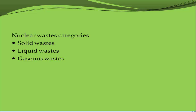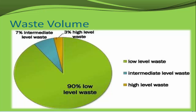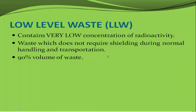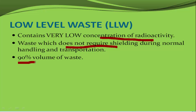Waste exists in solid, liquid, and gaseous forms. In terms of waste volume, 90% of waste is low level waste, only 3% is high level waste, and 7% is intermediate waste. Low level waste has very low concentration of radioactivity and sometimes requires shielding.